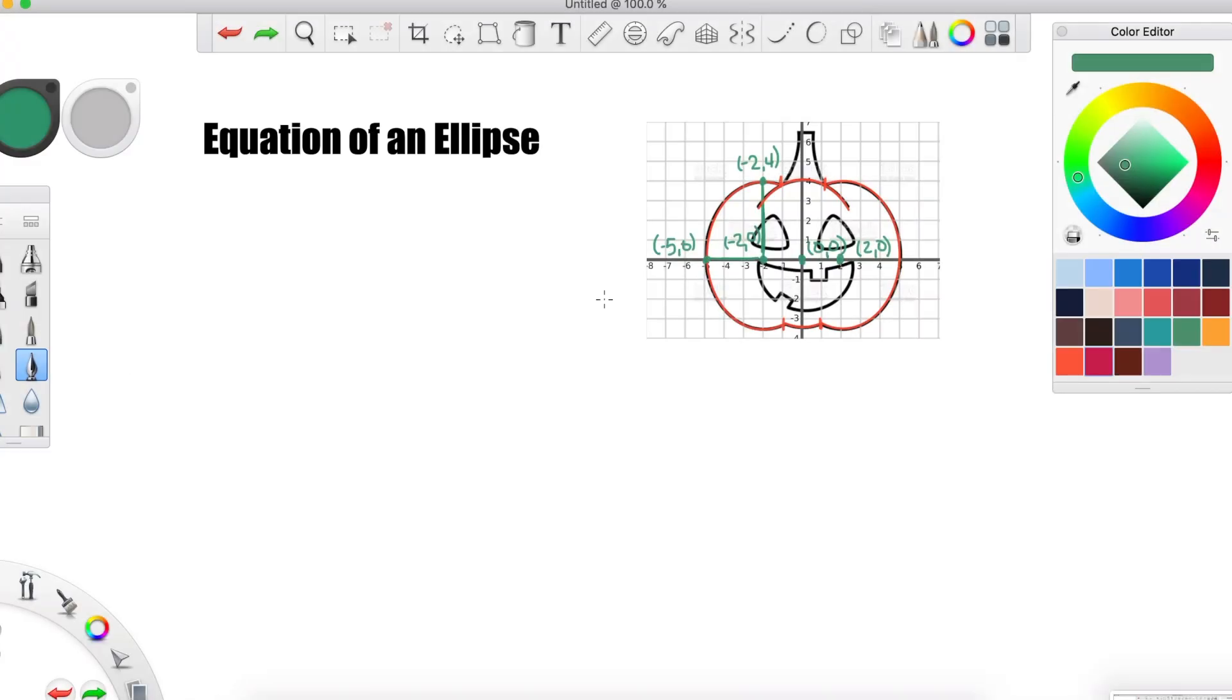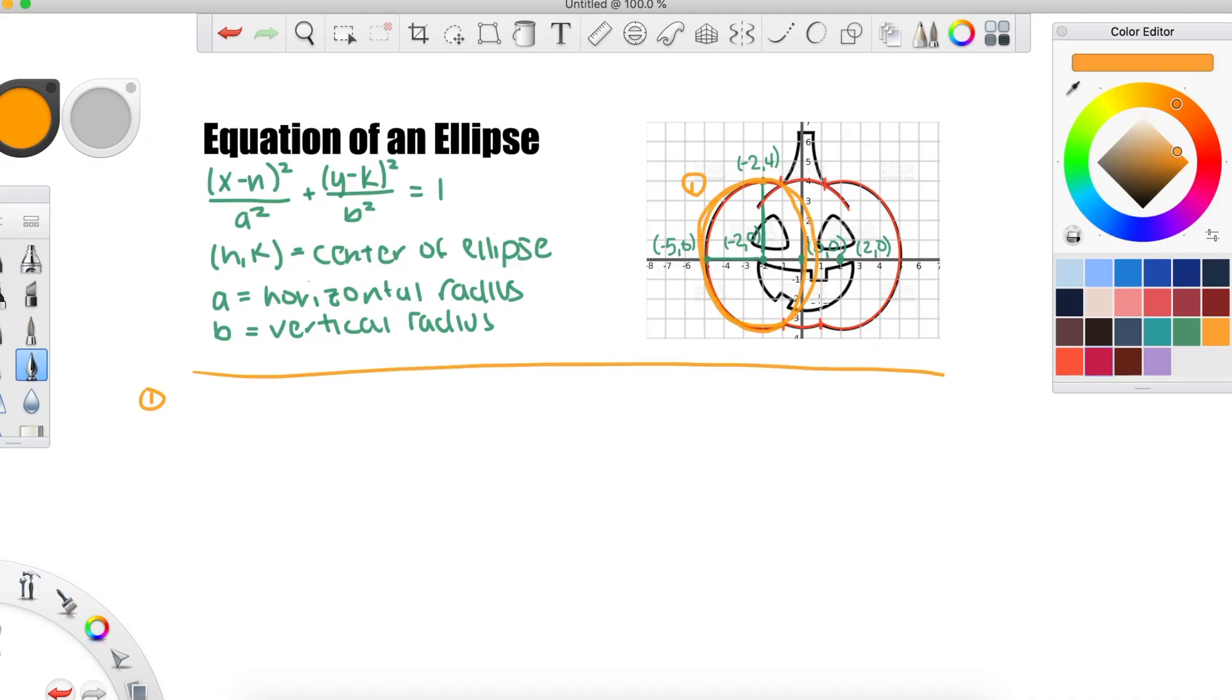Now that we have our points, this is the general equation for an ellipse. So for our ellipse on the left, our center point is negative 2, 0, the horizontal radius is 3, and the vertical radius is 4. Since we have all the information we need, we can actually just plug these numbers into the formula here, and this is the equation for our first ellipse. Pretty easy, right?